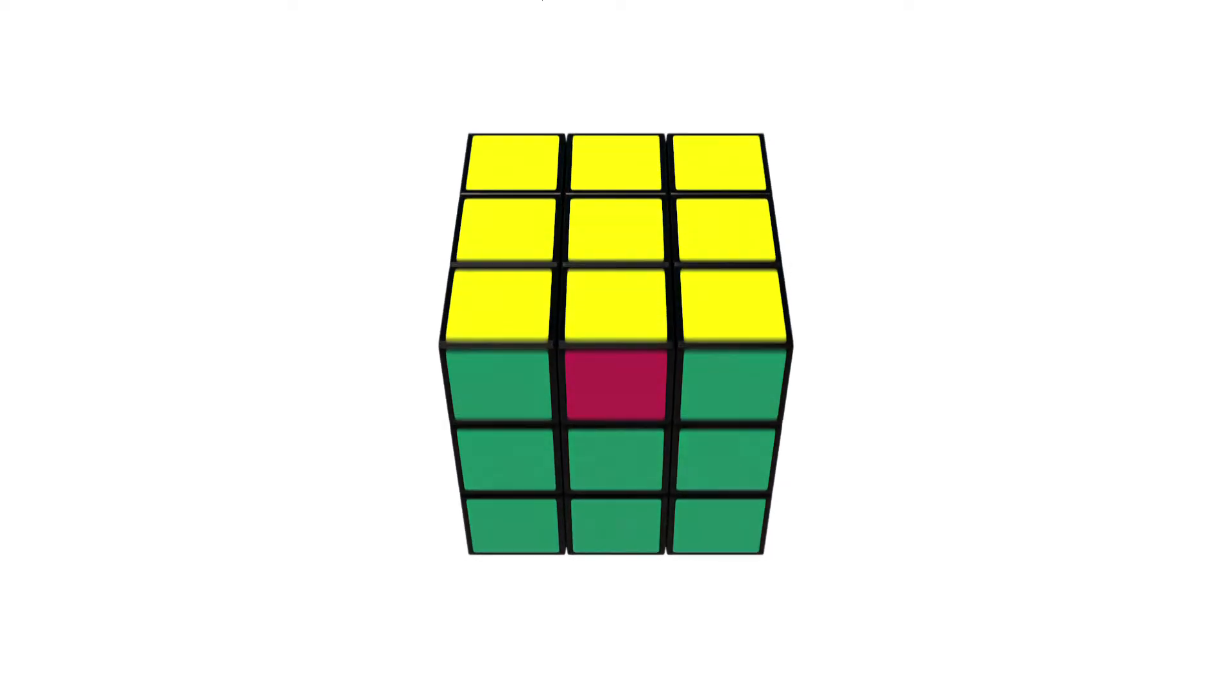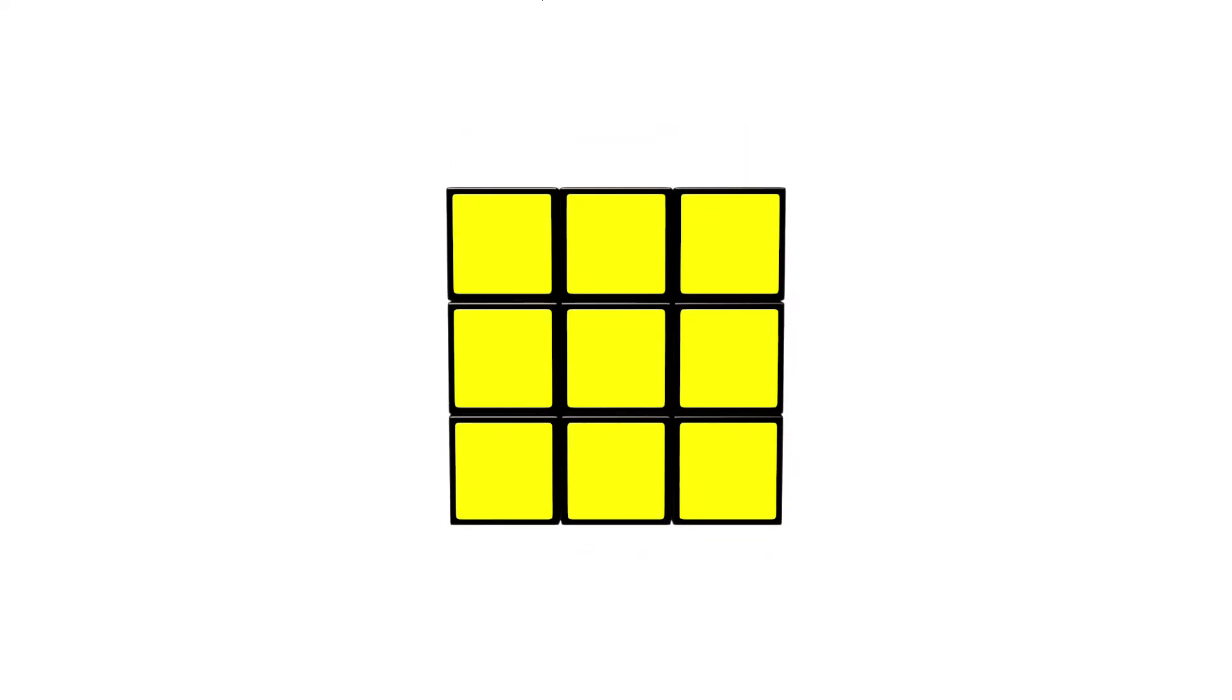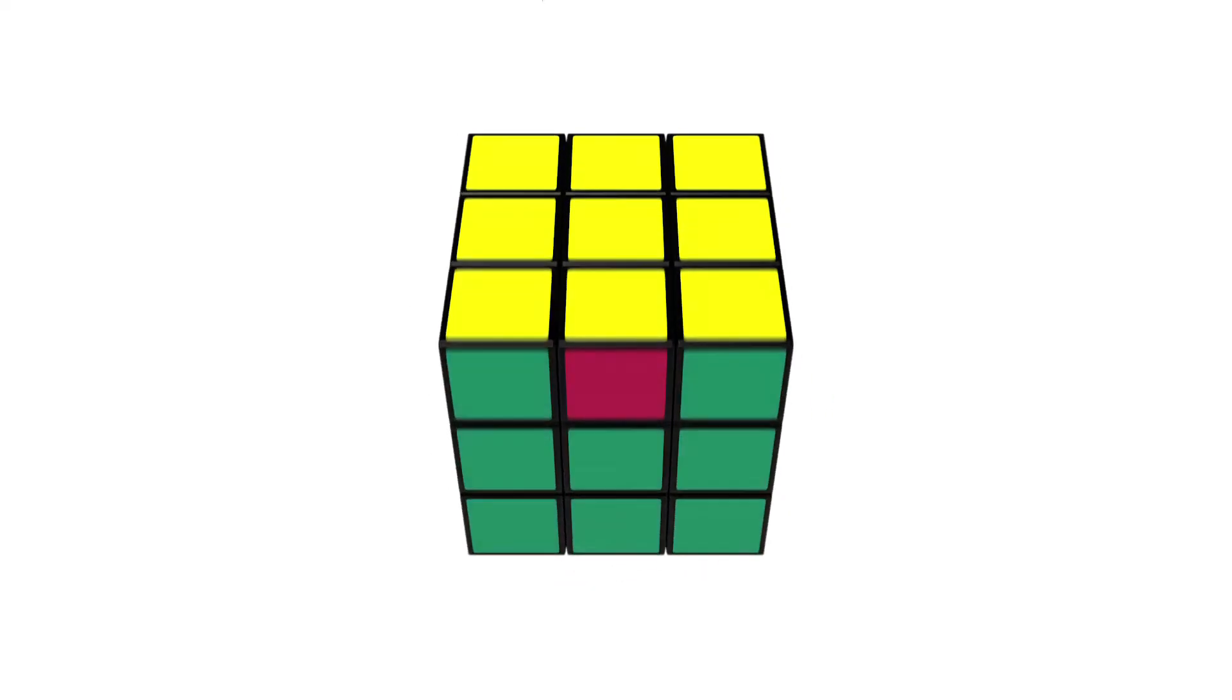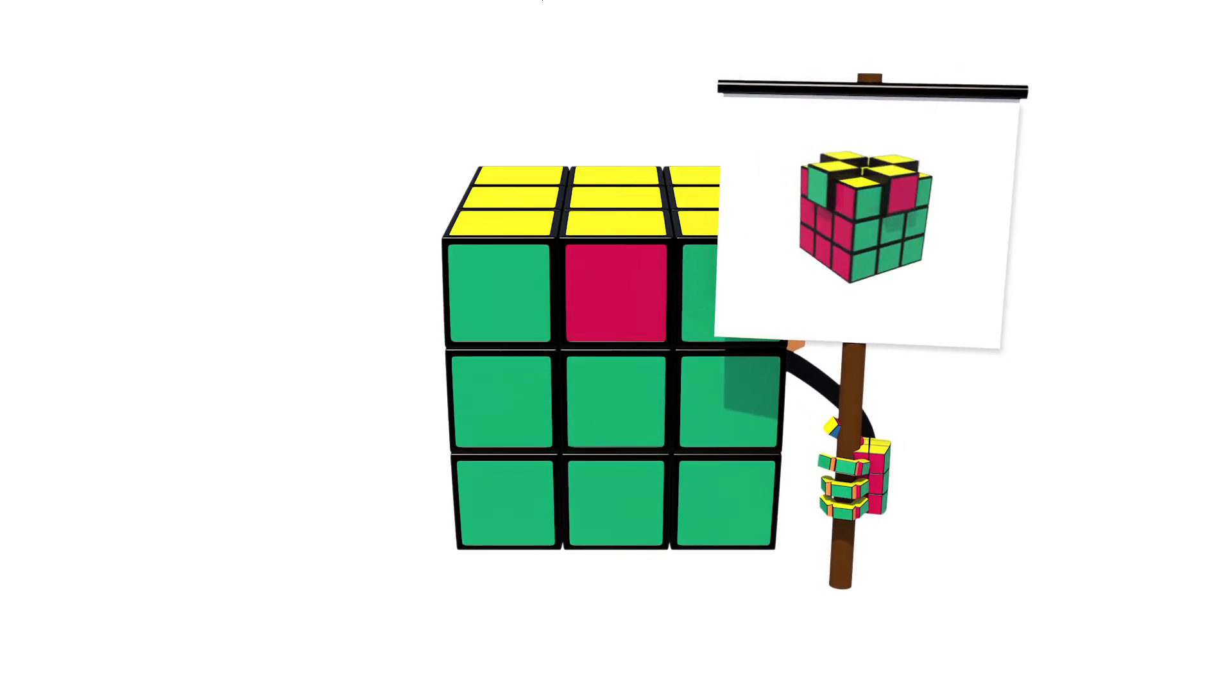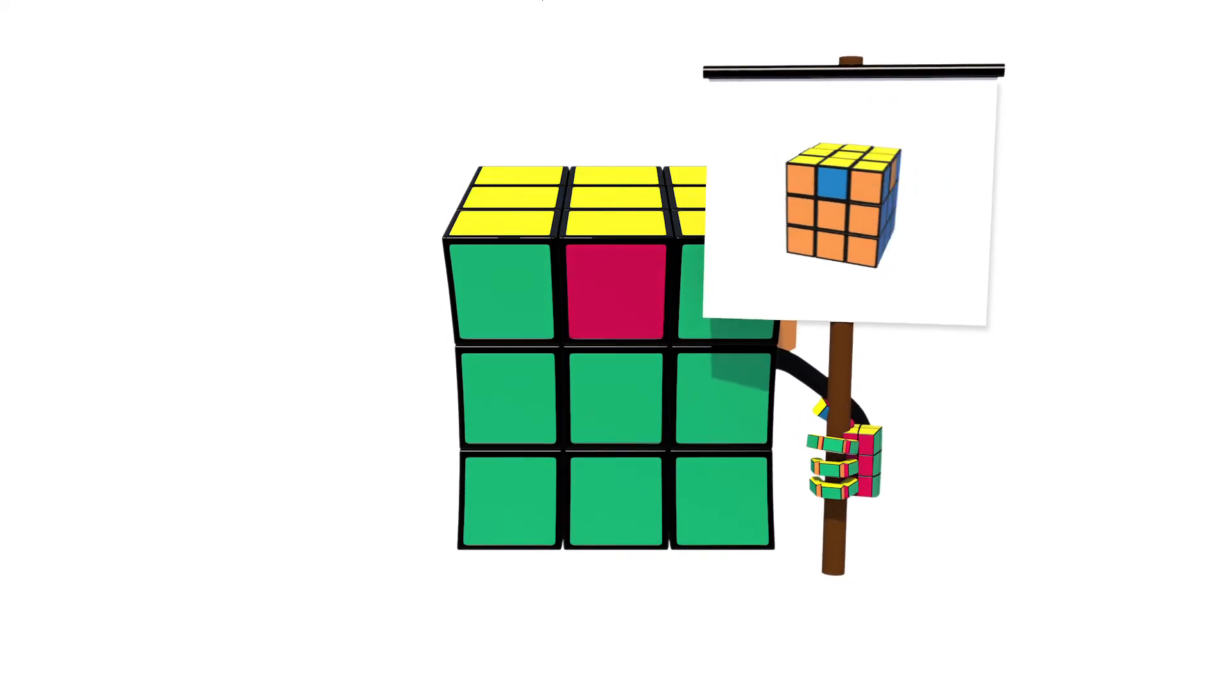Now, looking at the yellow face, work out if you need it to move clockwise like this or counterclockwise like this. If all four edges are incorrect, then you can do either of the sequences coming up. Then you'll be able to work out which way you need to go.